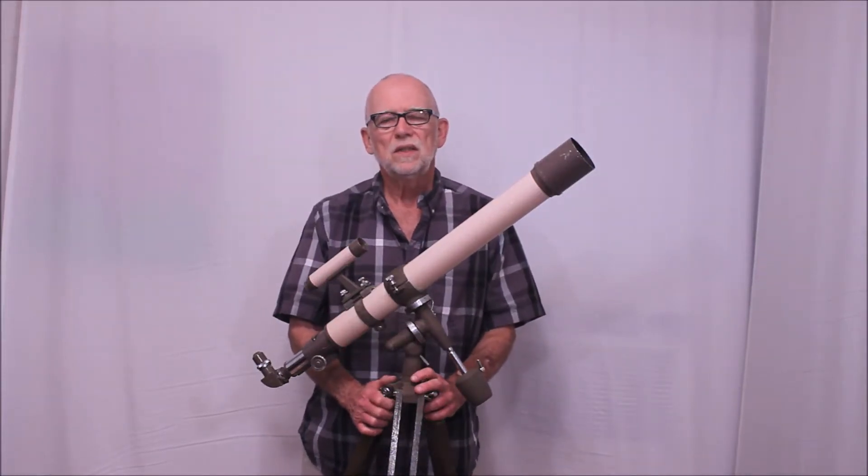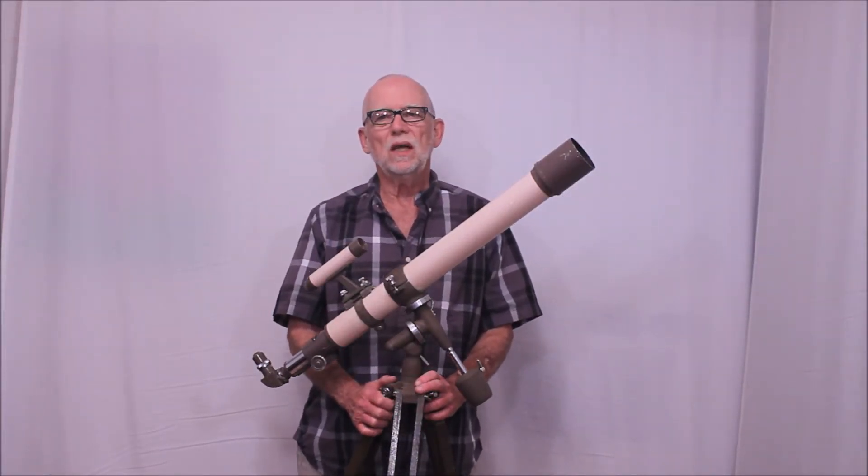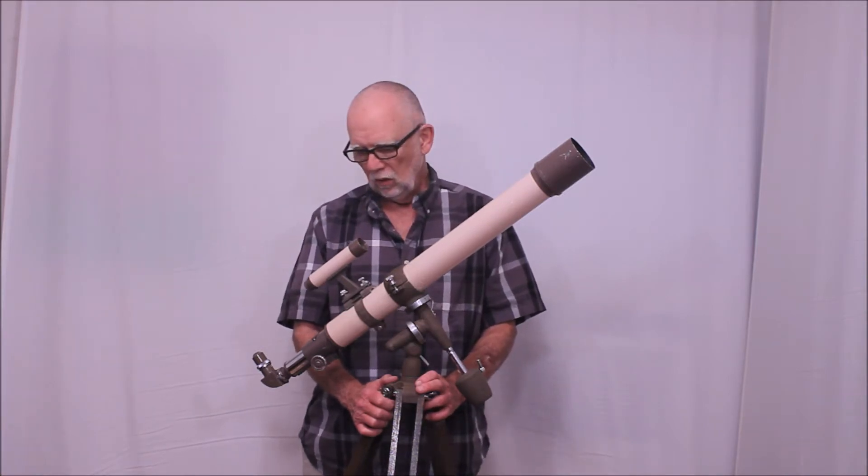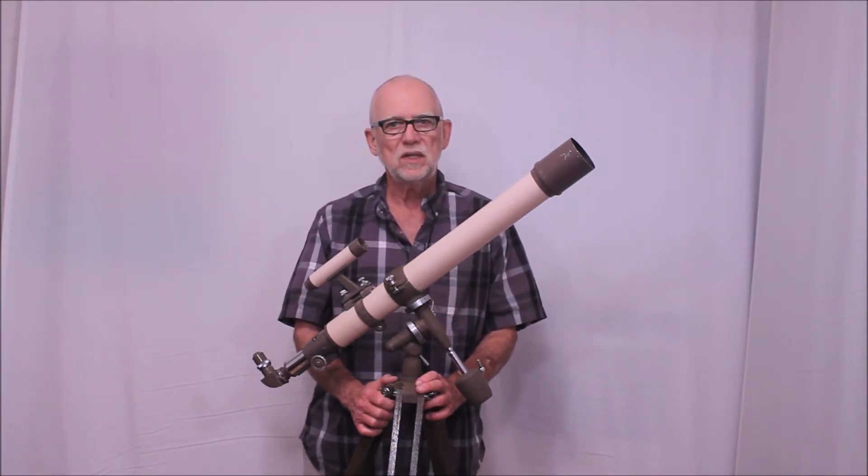Hi, I'm Dave. Today we're going to look at a Swift Model 839, a 60 millimeter refractor from the 1960s or so.